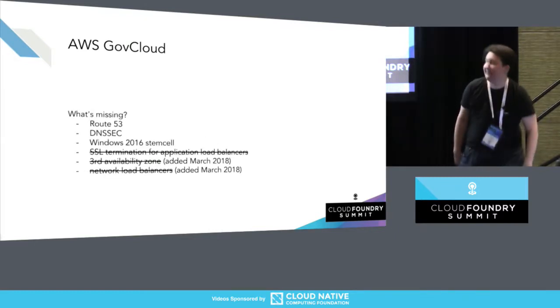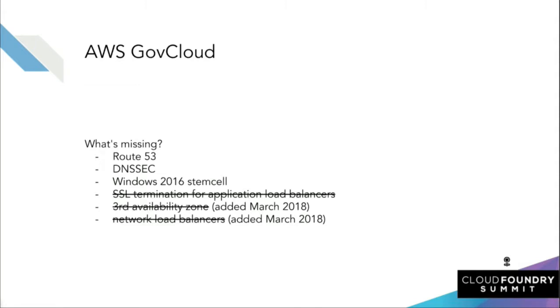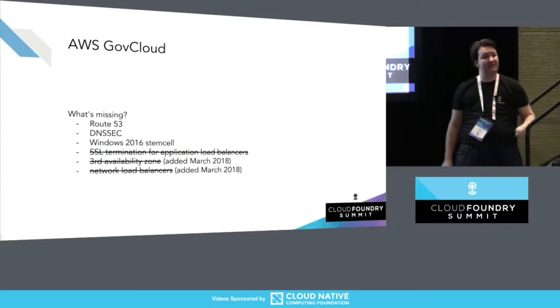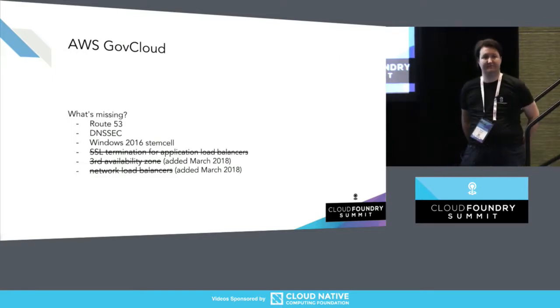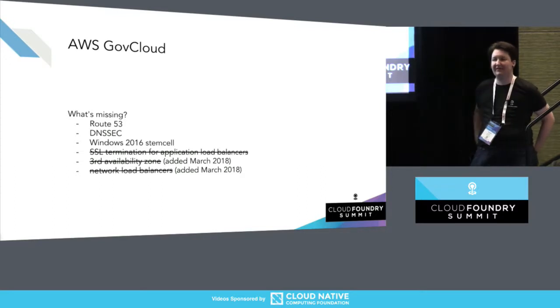What's different about the capabilities of GovCloud? There are a couple things missing. Route 53 services — Amazon's own DNS — are not available in AWS GovCloud, so you need to do DNS management outside of GovCloud, either on a vanilla AWS region or through another provider. We also don't have a Windows Server 2016 stem cell for AWS available yet. There are Windows 2012 R2 stem cells. If you're trying to put Cloud Foundry on AWS GovCloud and planning to support Windows or the full .NET framework, you're going to have more complexity there.